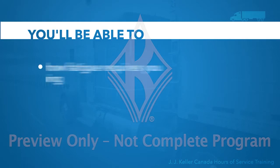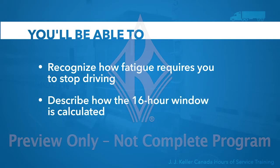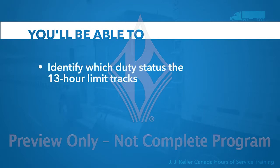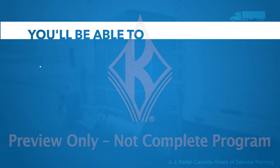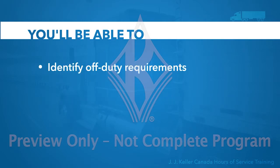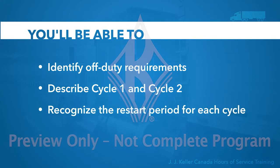This program is designed to help you avoid operating a CMV when fatigued and comply with the Hours of Service limits. After completing this module, you'll be able to recognize how fatigue requires you to stop driving even if you have hours left to legally operate, describe how the 16-hour window is calculated, identify which duty status the 13-hour limit tracks, explain how the 14-hour limit is calculated, identify off-duty requirements, describe cycle 1 (the 70-hour, 7-day cycle) and cycle 2 (the 120-hour, 14-day cycle), and recognize the restart periods for each.